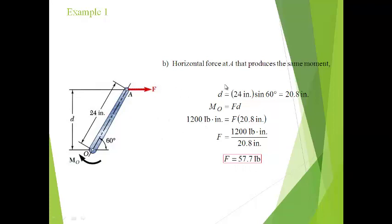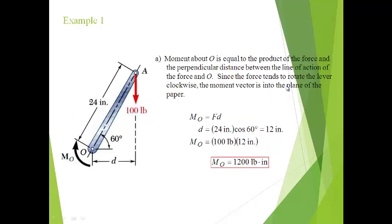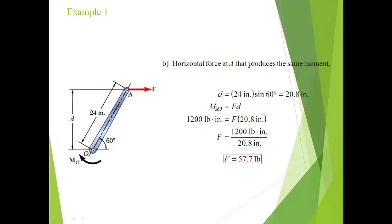For the second question, we find the horizontal force at A that produces the same moment of 1200 pound-inches. Here D is the opposite side to 60°. Since we have a horizontal force, we use the sin ratio: sin 60° = D/24, so D = 24 × sin 60° = 24 × (√3/2) = 20.8 inches. Now, moment = F × D, so 1200 = F × 20.8, giving F = 1200/20.8 = 57.7 pounds.